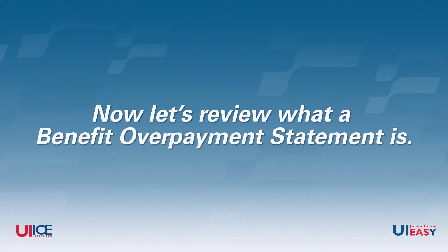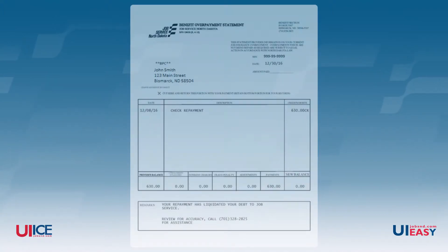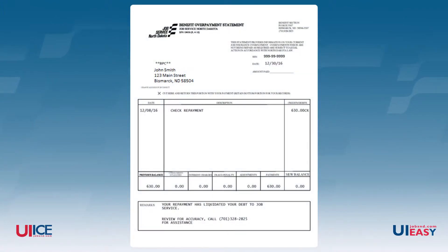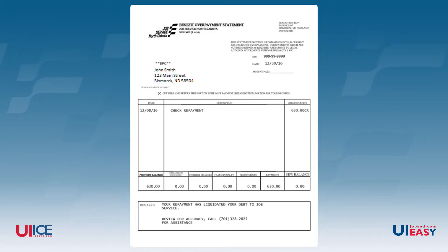Now let's review what a benefit overpayment statement is. This statement is not an official overpayment notice. This is a monthly billing statement that does not have appeal rights. The benefit overpayment statement provides a summary of activities that occurred during the last month. It also includes the remaining overpayment balance and an explanation of the principal, interest, penalties, and repayments.